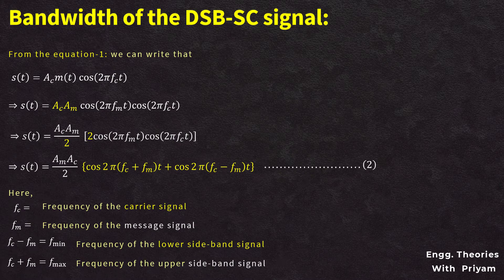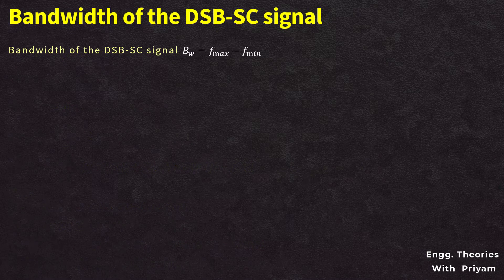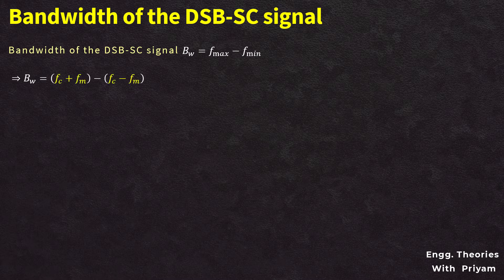The bandwidth of a signal is the difference between maximum frequency and minimum frequency. For the DSBSC modulated signal: BW = F_max − F_min. Substituting F_max = FC + FM and F_min = FC − FM, we get BW = (FC + FM) − (FC − FM) = FM + FM, so BW = 2FM.